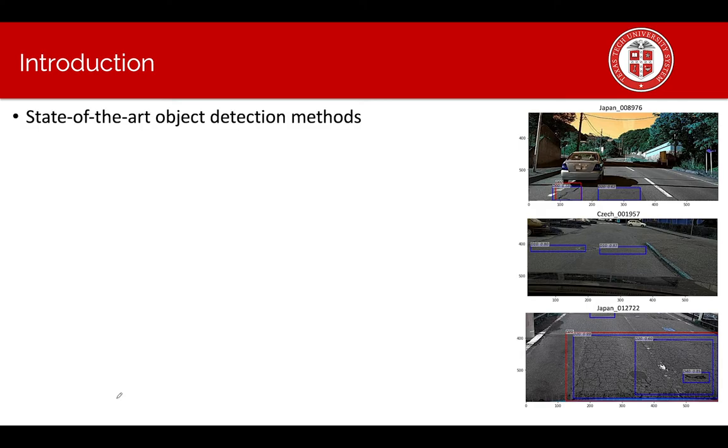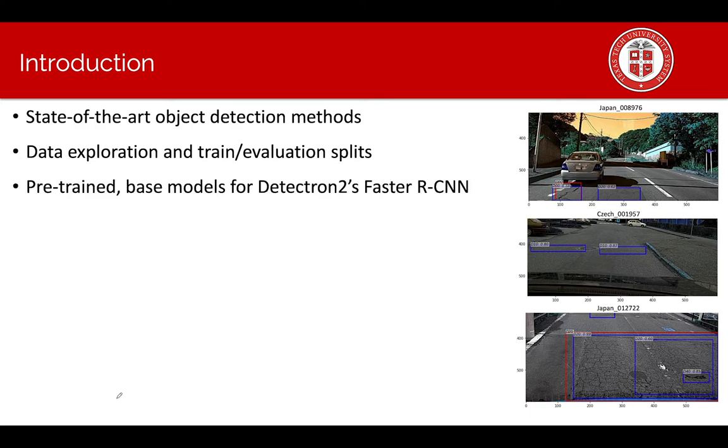We start with exploring the state-of-the-art object detection methods, then we do data exploration and train evaluation splits. We experiment with pre-trained base models for Detectron 2's faster R-CNN implementations.